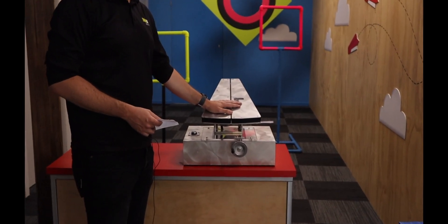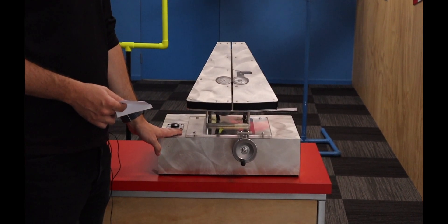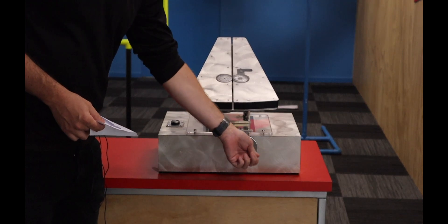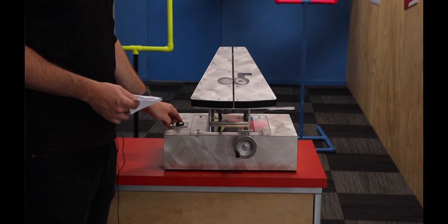Alright, so this is our paper plane launcher everyone. It's grey or silver, so you know that it's pretty good. Here's our crank - goes up, it goes down - and we've got a button over here. You can put a plane over in the slot here.